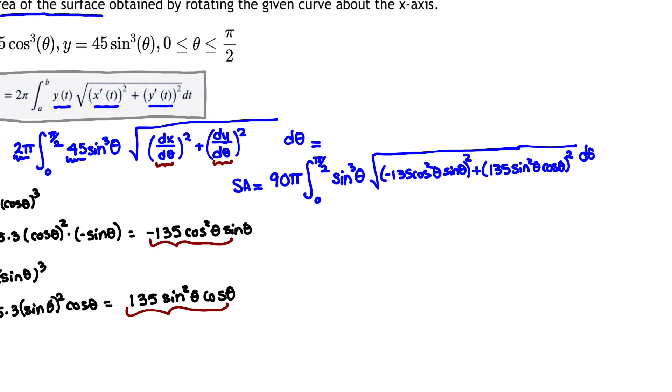So my surface area is equal to 90π times the integral from 0 to π/2 of sin³θ. And I'll do one more simplification step. I have 135² cos⁴θ sin²θ plus 135² sin⁴θ cos²θ, dθ.